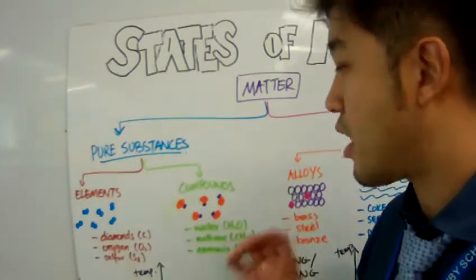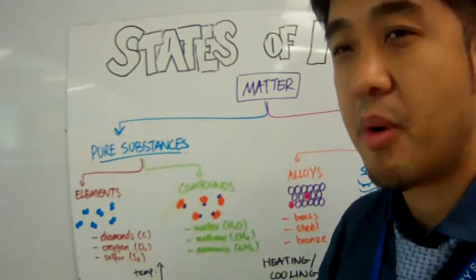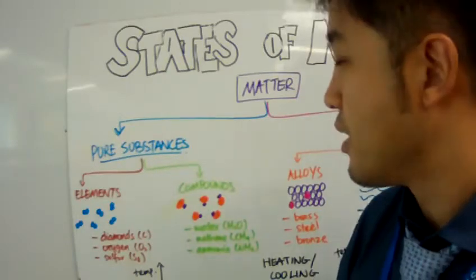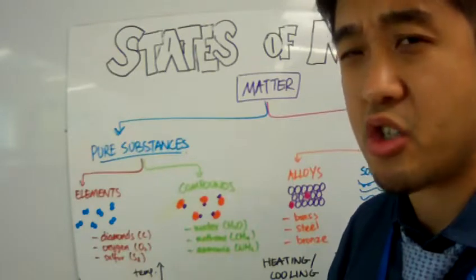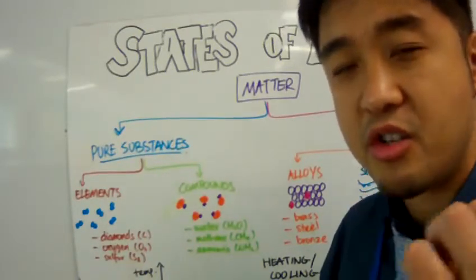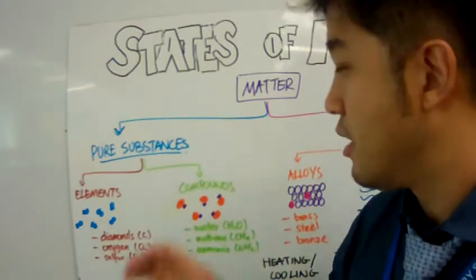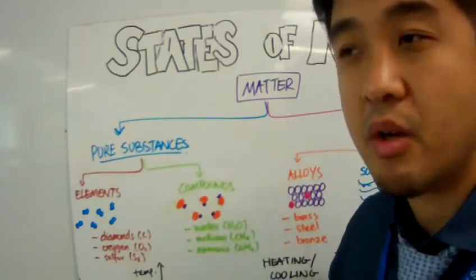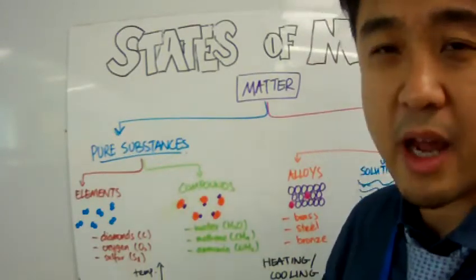What about compounds? Compounds are any matter that's composed of two or more types of atoms. For example, we have water. Water is H2O. We have two hydrogens combined with one oxygen. Now, the composition of a compound will always remain the same no matter what you do to that compound.